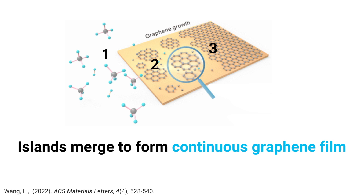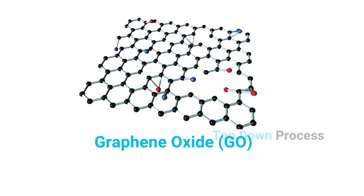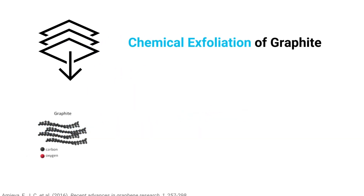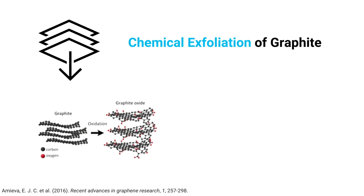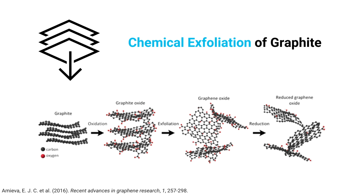The production process for graphene oxide looks very different. Graphene oxide is produced using a top-down process — the most common being the chemical exfoliation of graphite. In this process, graphite is first oxidized to give graphite oxide, which then undergoes exfoliation to ultimately give graphene oxide. For slightly improved quality, graphene oxide may undergo an additional reduction step to give reduced graphene oxide, which is of higher quality compared to traditional graphene oxide.